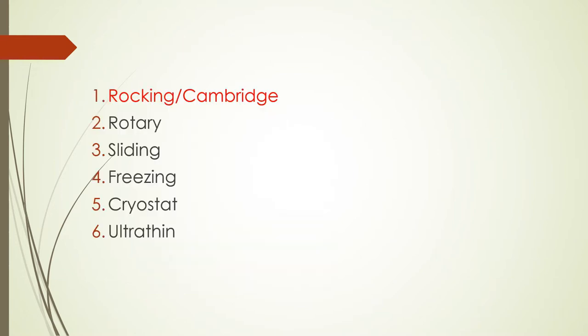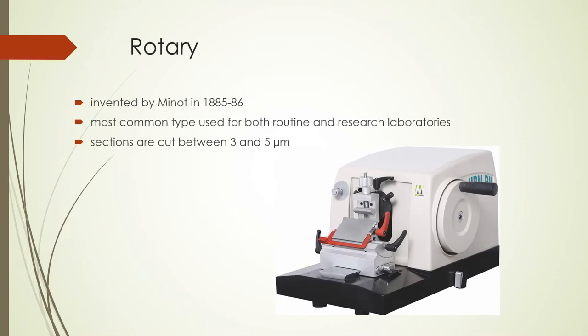Next, we have the rotary microtome — the most common type of microtome used for both routine and research laboratories. It was invented by Minot in 1885 to 1886 and can cut sections between 3 to 5 microns, which is pretty decent for routine purposes already.